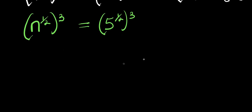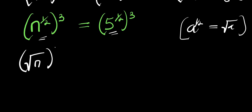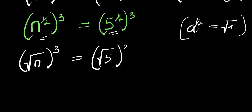From here, since a to the power 1 over 2 equals square root of a, we apply the same here. We get square root of n raised to the power of 3, and this equals square root of 5 raised to the power of 3.